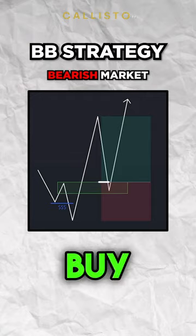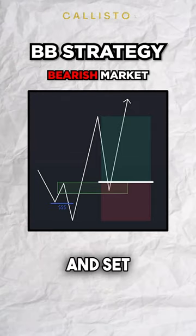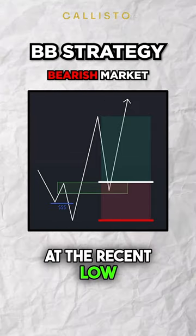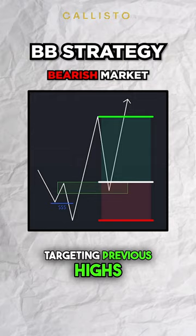You can then set a buy limit at the breaker block, and set SL at the recent low, targeting previous highs.